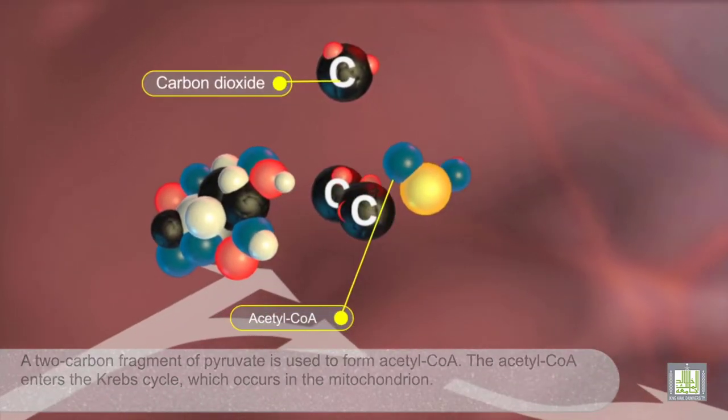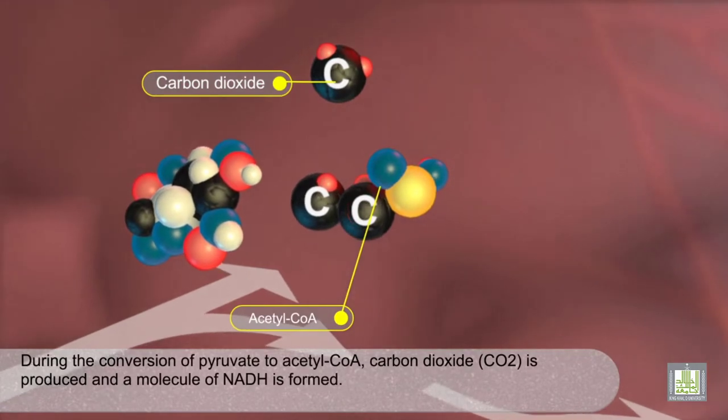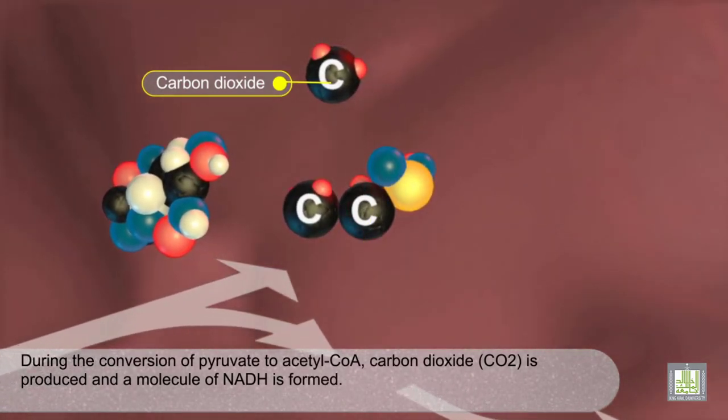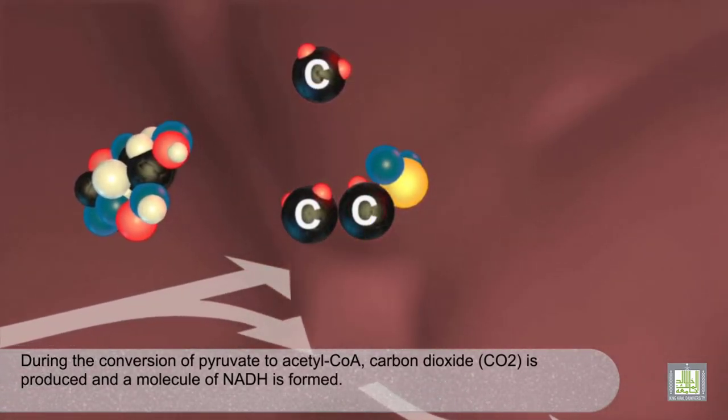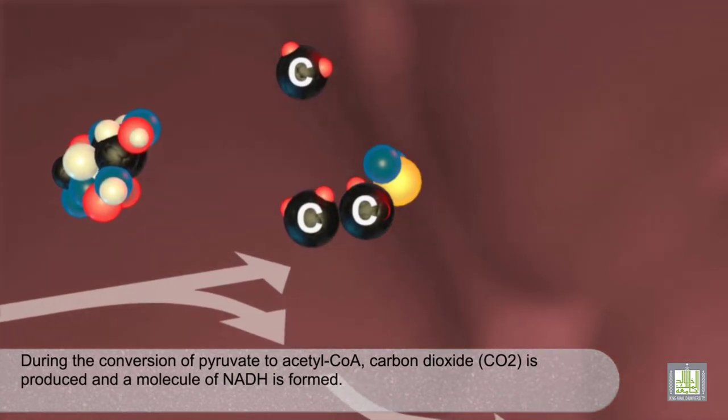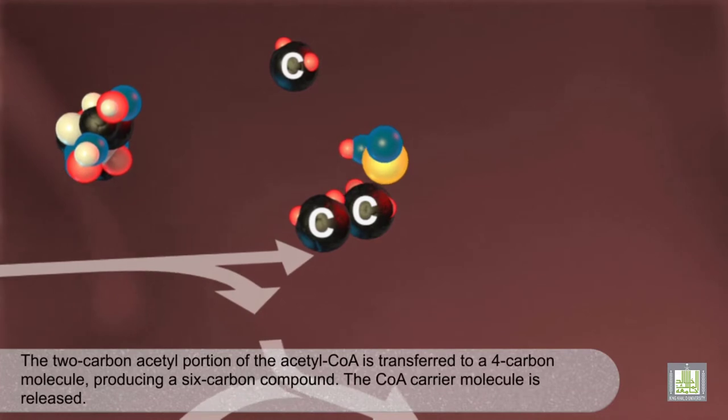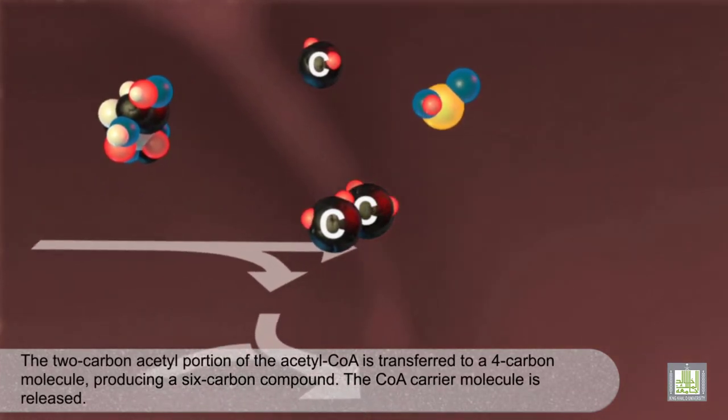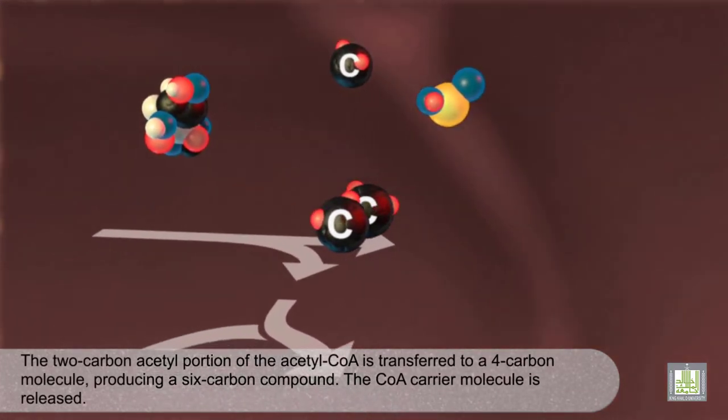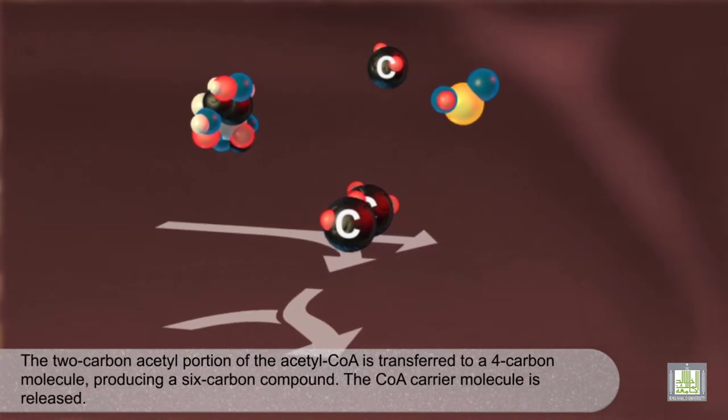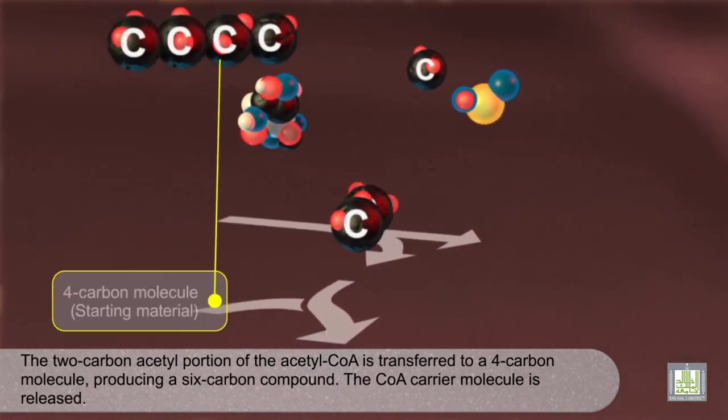During the conversion of pyruvate to acetyl-CoA, carbon dioxide (CO2) is produced, and a molecule of NADH is formed. The two-carbon acetyl portion of the acetyl-CoA is transferred to a four-carbon molecule, producing a six-carbon compound. The CoA carrier molecule is released.